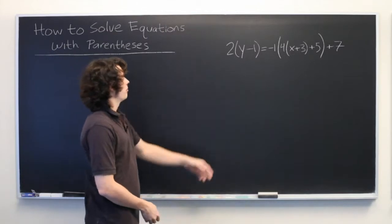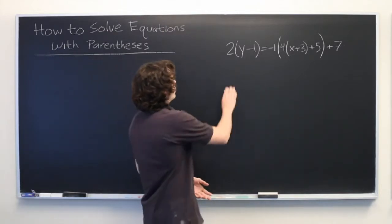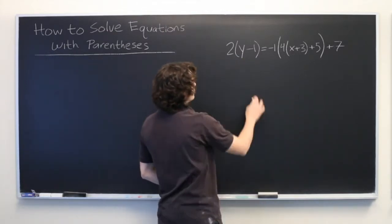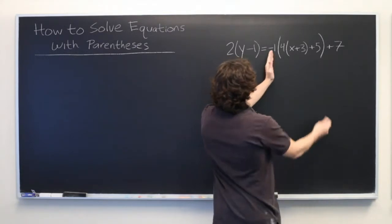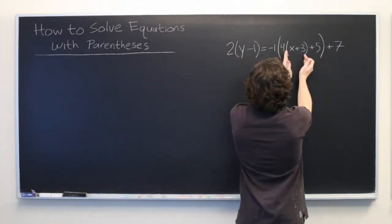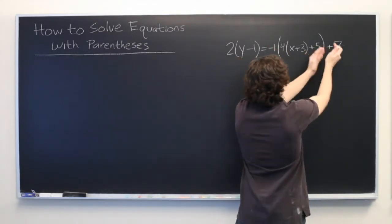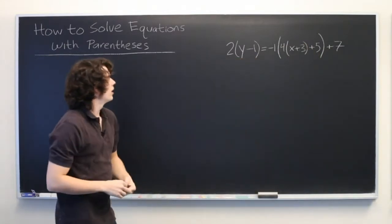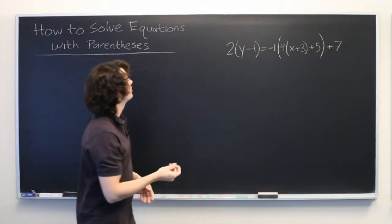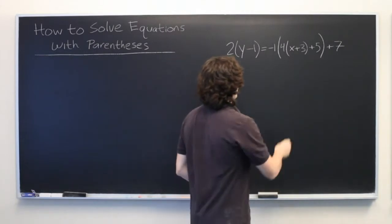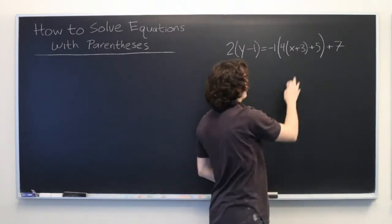So here we have a nasty looking equation: 2 times y minus 1 equals negative 1 times 4 times x plus 3 plus 5 plus 7. We want to try to write this in a form that is actually readable. So what we're going to do is start on the inside and work our way out.